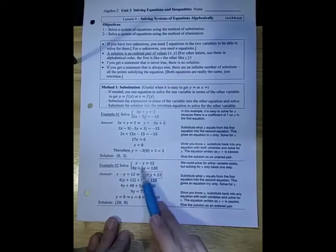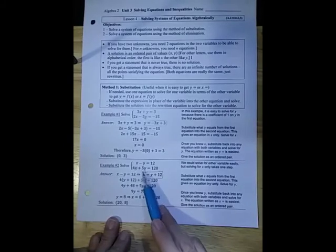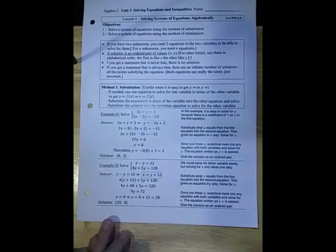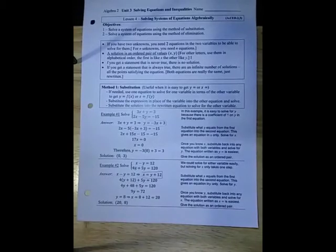Is 20 minus 8 equal to 12? Yes. Is 4 times 20, which is 80, plus 5 times 8, which is 40, equal to 120? Yes it is. You can guarantee that that is your solution.